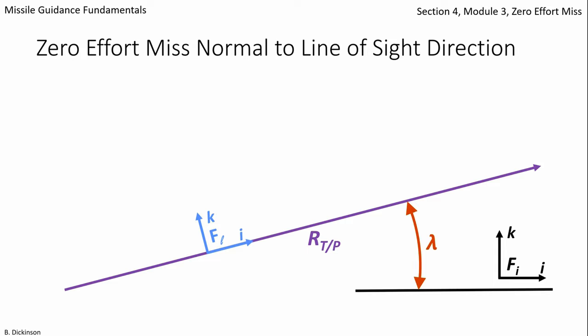So suppose at some future point in time, there is a zero effort miss vector, which we translate to the current range vector.